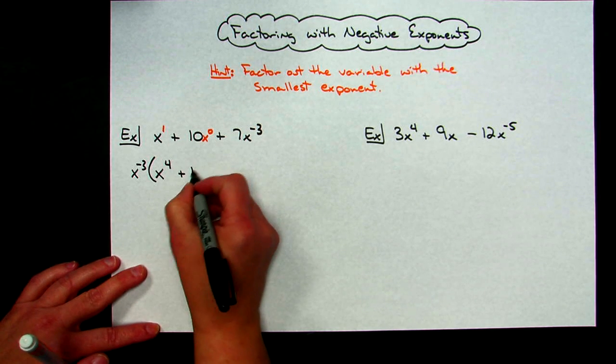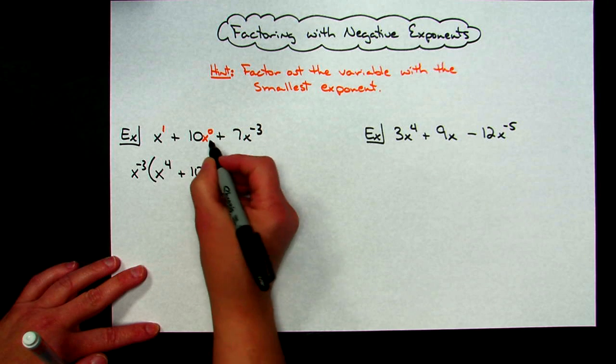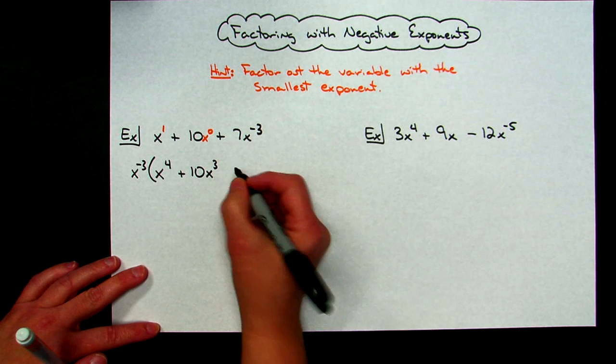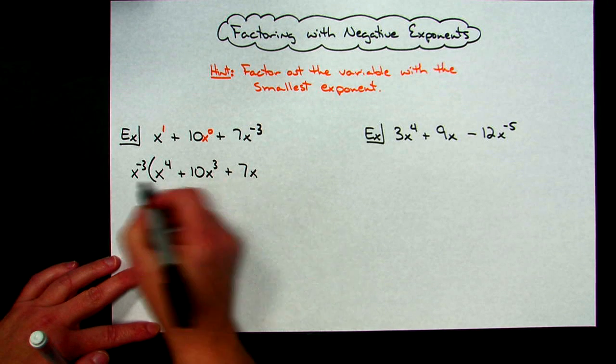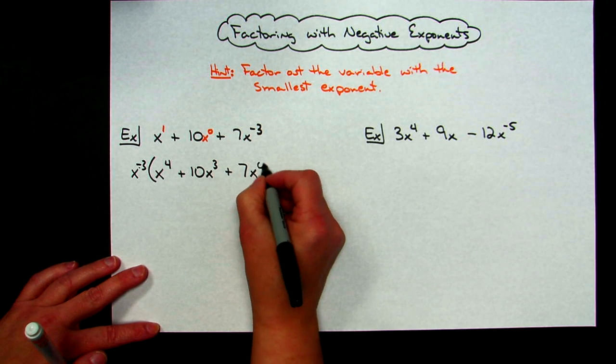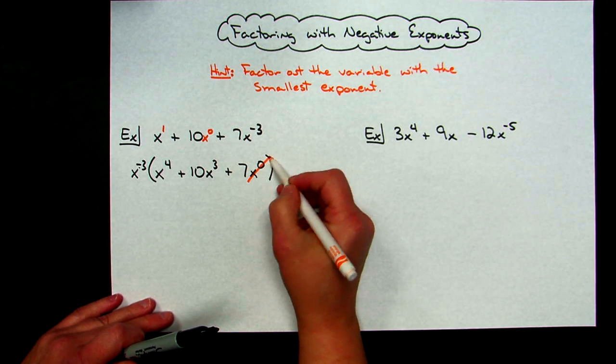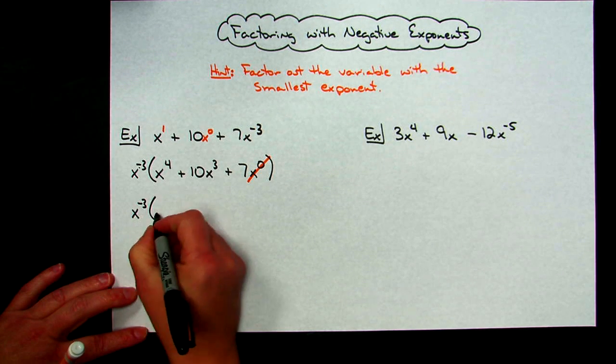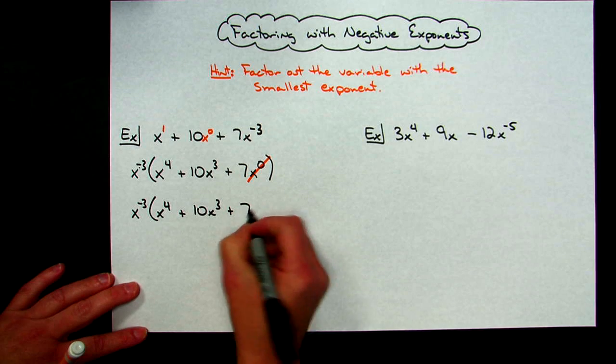For the middle term, the 10 will stay, and then I've got to ask myself, x raised to what power? -3 plus what number is going to give me 0? Well -3 plus 3 is going to give me 0, so this has to be x^3. Here the 7 comes down, and -3 plus what gives me -3? While -3 plus 0 would give me -3. However, we know that x^0 is 1, so really I don't need that in there at all. So the final factored answer here would be x^(-3) times the quantity x^4 + 10x^3 + 7.